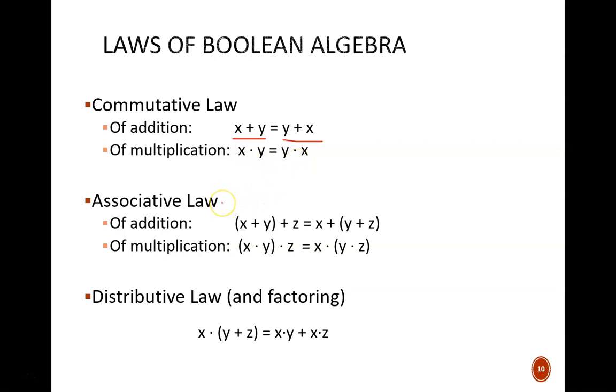Similarly, X and Y is identical to Y and X. The associative law shows that when the same operation is performed across more than two variables, it does not matter which variables are operated on first. This applies to both OR-ing and AND-ing. For example, with X or Y or Z, we could first do X or Y, then OR that result with Z. Alternatively, we could first do Y or Z, then OR that result with X. Either way, the same logic value will be produced at the end.